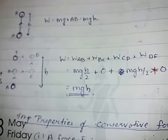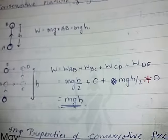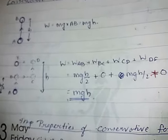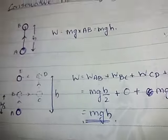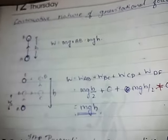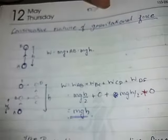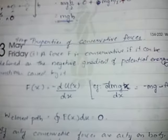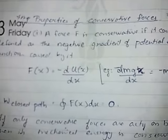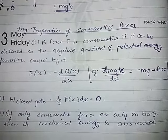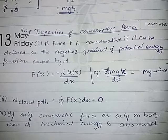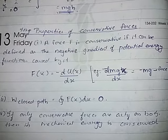Gravitational force is a conservative force. We have all the properties of conservative forces. A force F is conservative if it can be defined as the negative gradient of a potential energy function: F equals negative dU by dx.